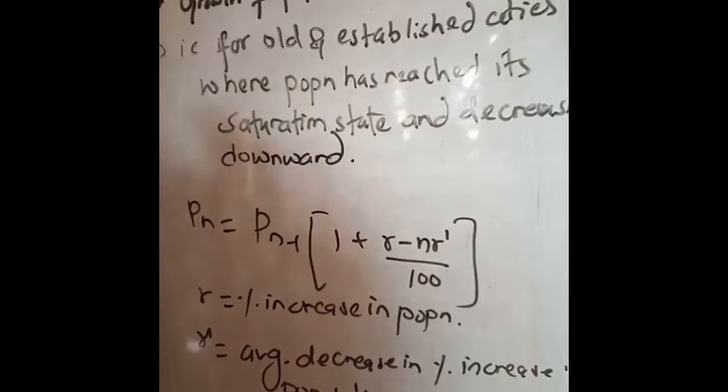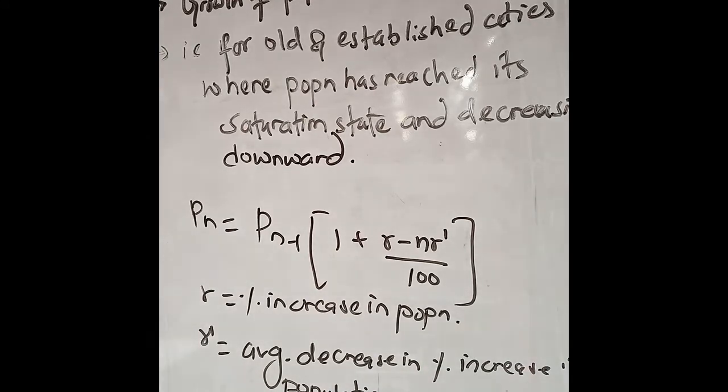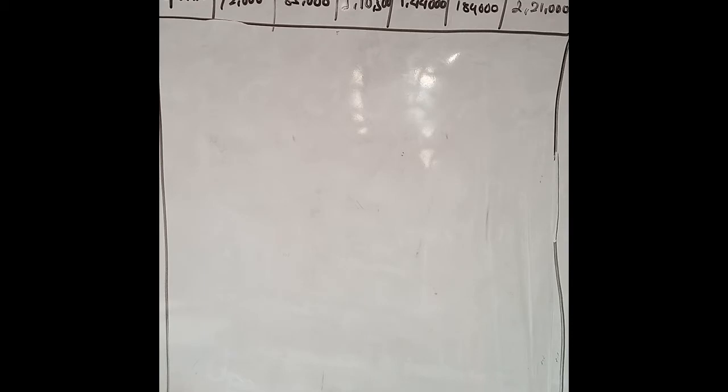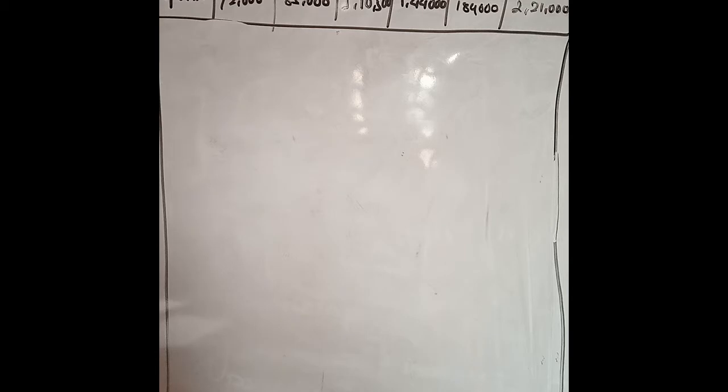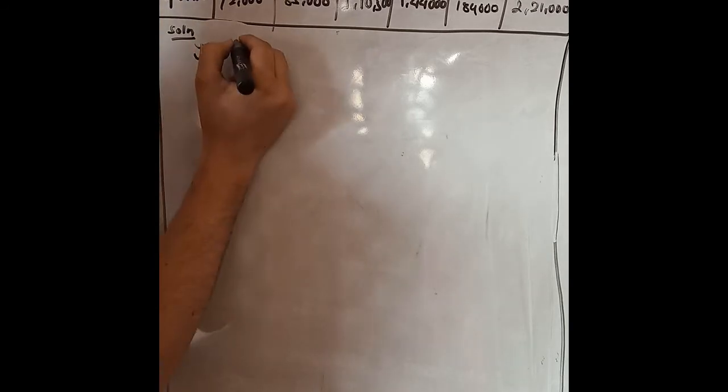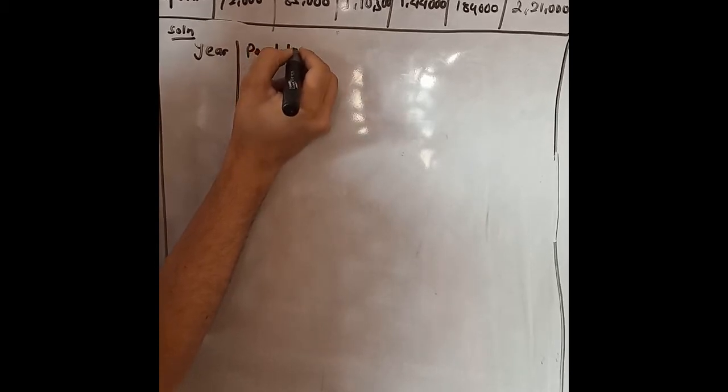We can utilize this formula more efficiently when we do the numerical of this Decreased Rate of Growth method. Here we are presented a problem of forecasting population by this method. The data of population has been shown from 1922 to 1972, and our problem is to determine the population in the year 1992. So the solution begins.